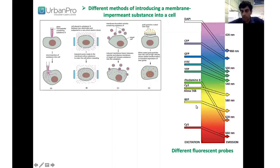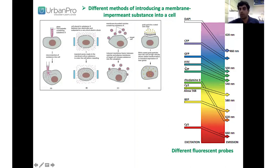These probes cover different ranges in the visible spectrum. You can see DAPI, CFP, GFP, and YFP, as well as rhodamine, Alexa, RFP, and cyanine-5.